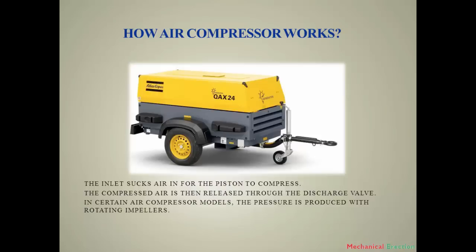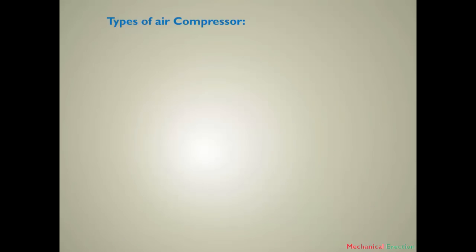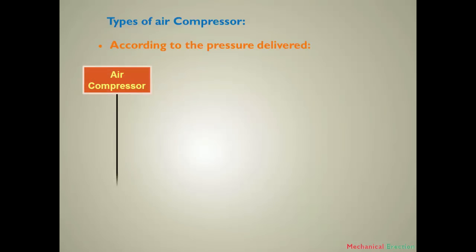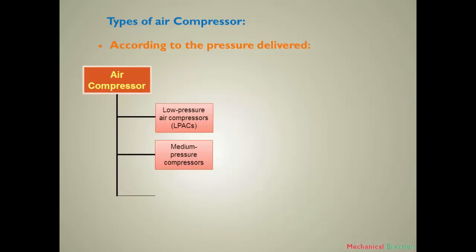Now, the types of air compressor. Air compressors may be classified into different types. According to the pressure delivered, air compressors are of three types: first, low pressure air compressor; second, medium pressure compressor; and third, high pressure air compressor.